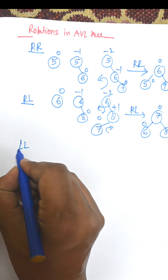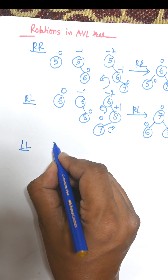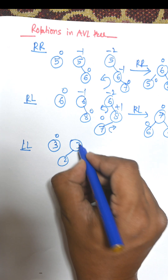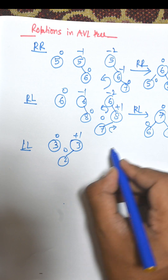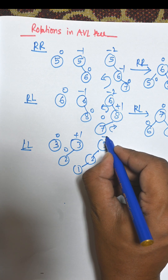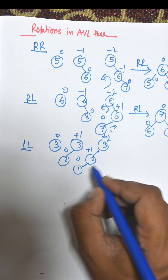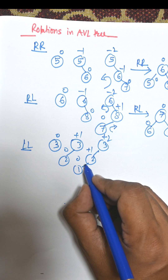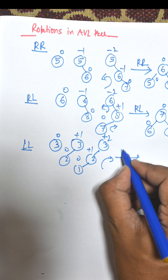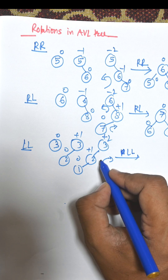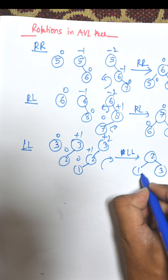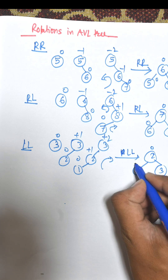Now the LL rotation means Left-Left. Suppose 3 is the root node and 2 is on the left hand side of 3, that is plus 1, 0. Now suppose 1 is on the left hand side of 2, that is plus 2, plus 1, and 0. So there is an LL rotation — Left-Left rotation means clockwise. 2 will be the root, 3 goes to the right hand side of 2, and 1 goes to the left hand side of 2. That gives 0, 0, 0 — it is now an AVL tree.